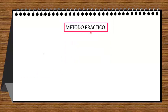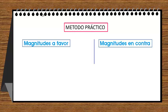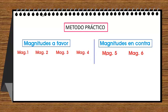Acá tenemos el método práctico — un trucazo para resolver problemas que involucran regla de tres compuesta. El trucazo consiste en separar magnitudes en dos grupos: por el lado izquierdo, magnitudes a favor; y por el lado derecho, magnitudes en contra. Vamos a tener magnitud 1, magnitud 2, magnitud 3, magnitud 4, magnitud 5, magnitud 6 — puede haber más magnitudes, pero vamos a separar en dos grupos.